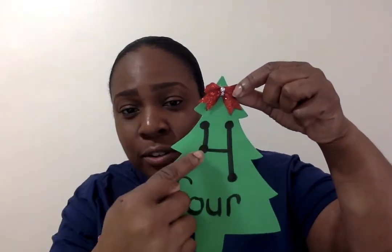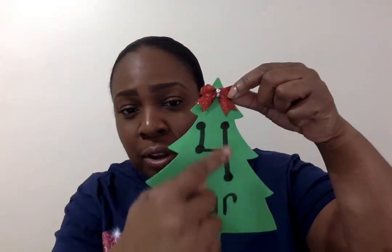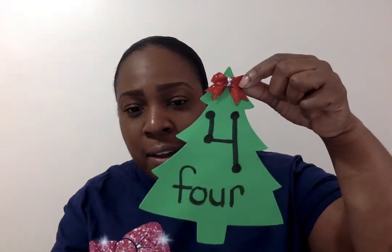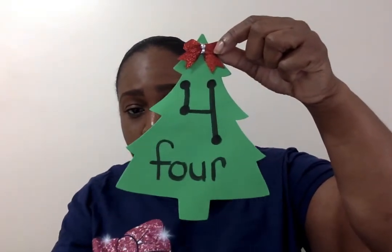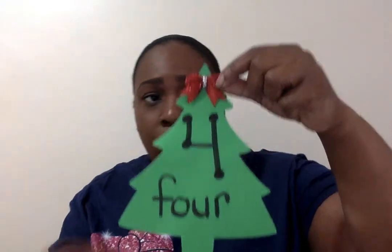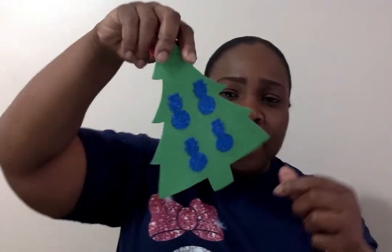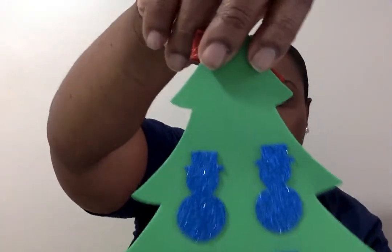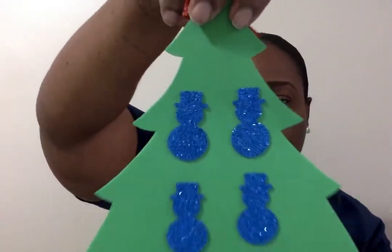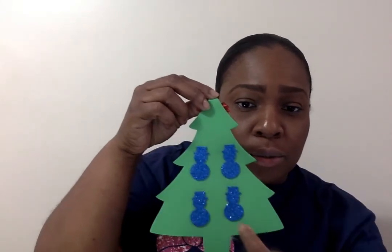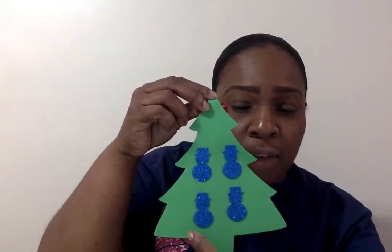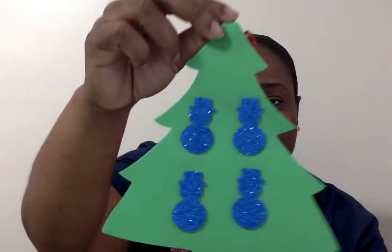What comes after three? That's right — four! Here is the number four, and here are my four dots: one, two, three, four. Here is the written word on the bottom. When I turn it around, how many decorations do you see? That's right — there are four snowmen. Let's count: one, two, three, four. Good job, boys and girls!